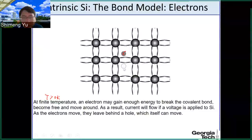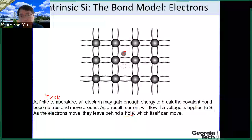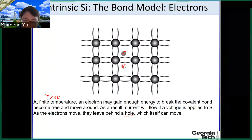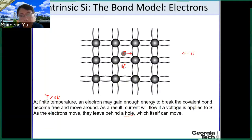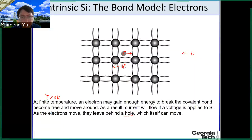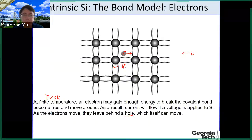At the same time, we leave a vacancy of the electron behind. This vacancy is called a hole — a new concept in semiconductors. The electron is negatively charged, so the hole will be positively charged. If we apply an electric field, the electrons move opposite to the electric field direction, and the hole, being positively charged, moves along the electric field. Both electron and hole can move, allowing current to flow. So silicon becomes somewhat conductive — this is why it's called a semiconductor.